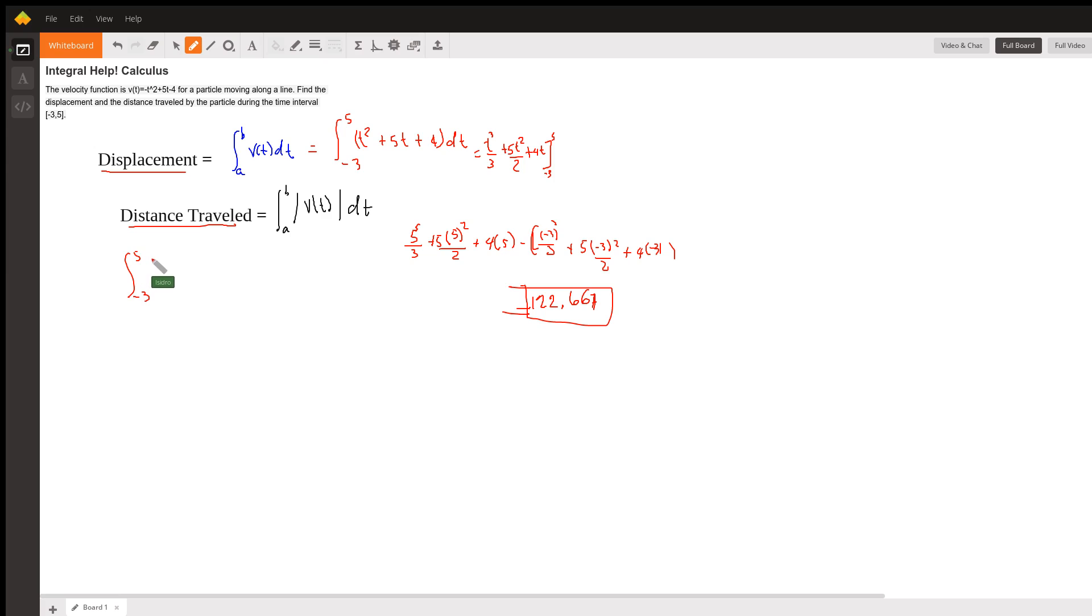Except that you have to use the absolute value. In this case we have the integral from negative 3 to 5 of the absolute value of t squared plus 5t plus 4 dt.